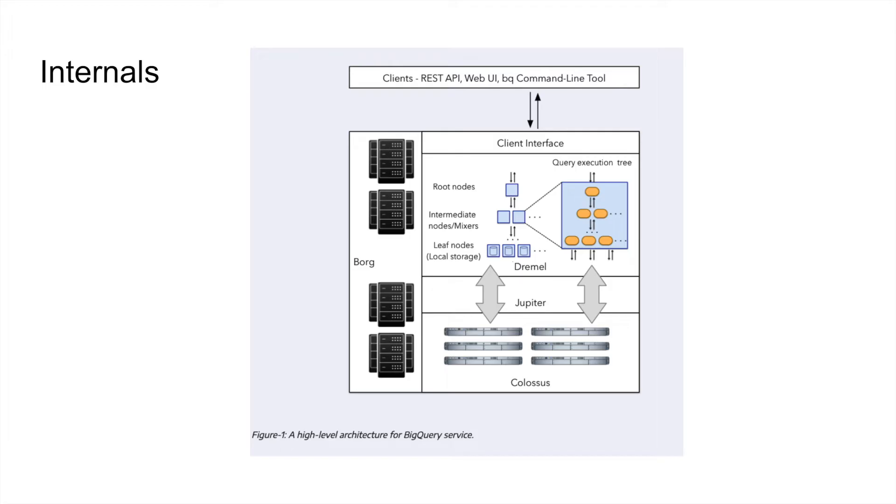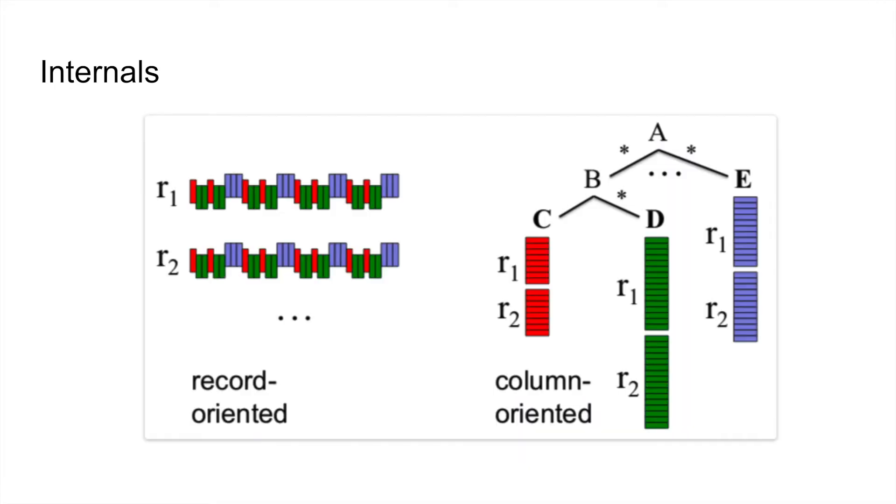The third part of BigQuery internal is Dremel. This is the query execution engine. It generally divides your query into a tree structure and separates your query in such a way that each node can execute an individual subset of the query. But before moving ahead, let's first look into columnar and record-oriented storage.